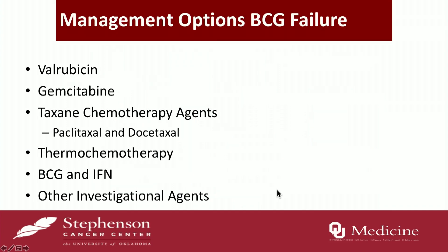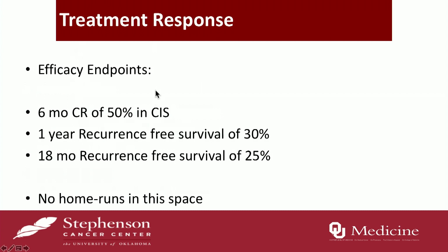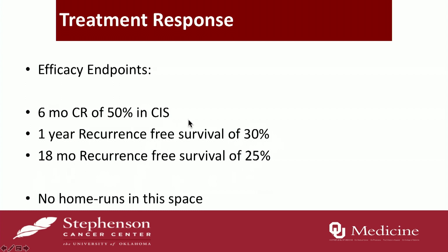None of the bladder-conserving therapies are home runs. What does the FDA require? The bar is not very high — a one-year recurrence-free survival of 30 percent. That means 70 percent of patients will not respond to these therapies. It is important that patients understand there are really no home runs in this space; it is a very high-risk patient population.